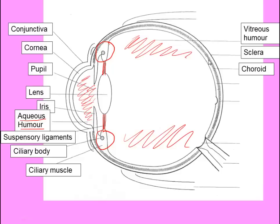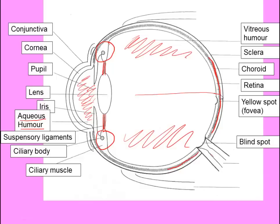The choroid is the next layer in — a dark layer at the back of the eye. This is not our light-sensitive layer. What it does is absorb light which has already passed through the eye. Light comes in, passes across the retina, is detected there, and electrical impulses are generated and fed along to the optic nerve. The choroid stops light reflecting back off the sclera, which would otherwise give you a confusing double image.